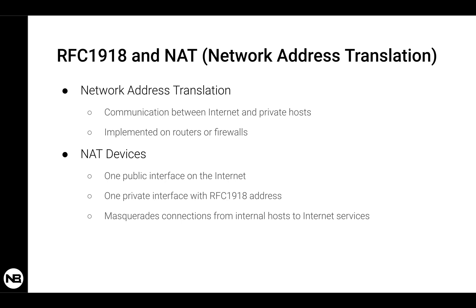NAT basically masquerades a connection from an internal host to an internet host by replacing the internal IP with its own public IP. So in the end, it looks like the NAT device is performing the communication with the end host on the internet, whereas it's just translating and masquerading the communication of an internal host.